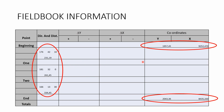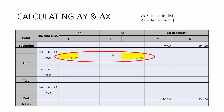First, we put in the information given in the question — or from our field book in a realistic scenario. We enter the direction and distance for beginning to one, one to two, and two to end. We also enter our first and last coordinates as given.